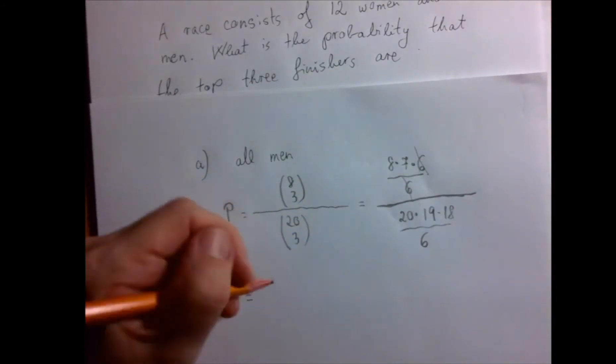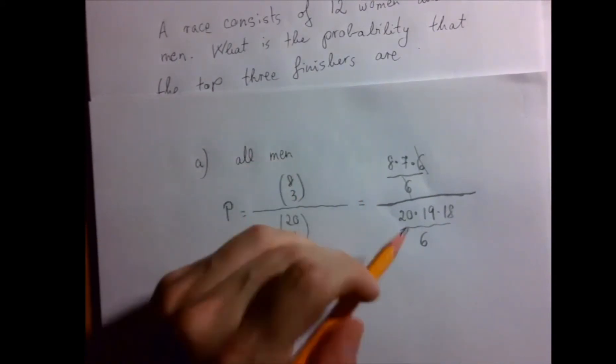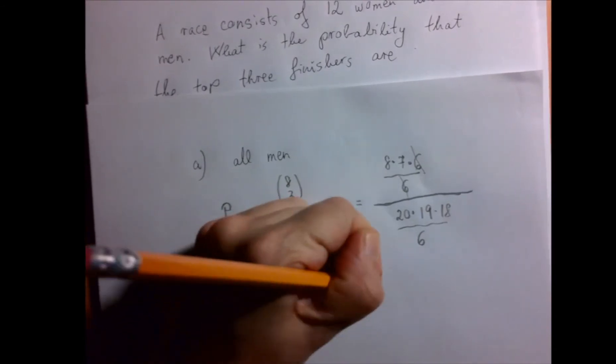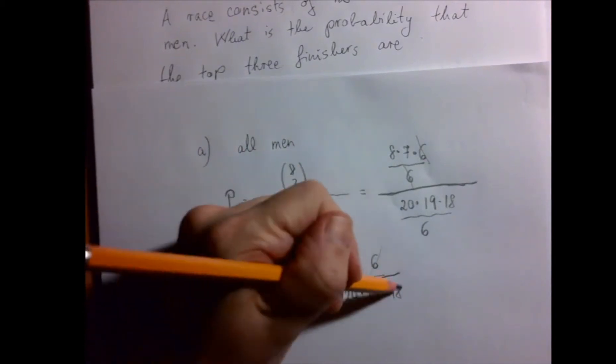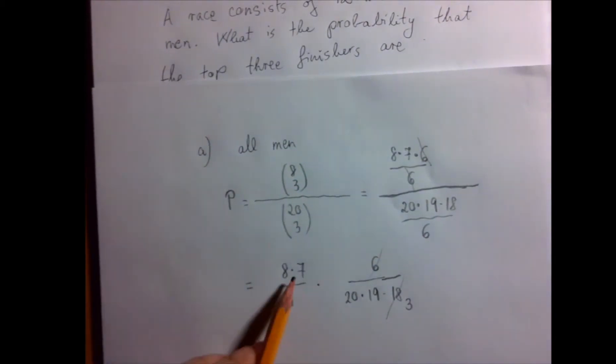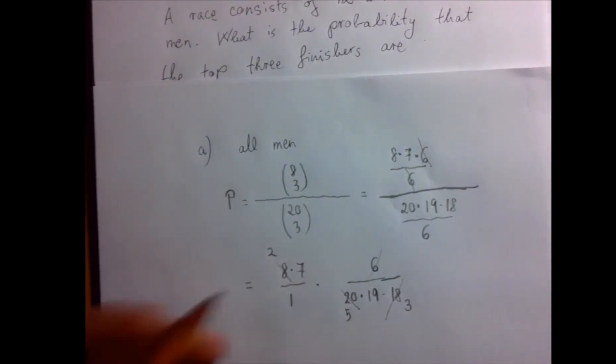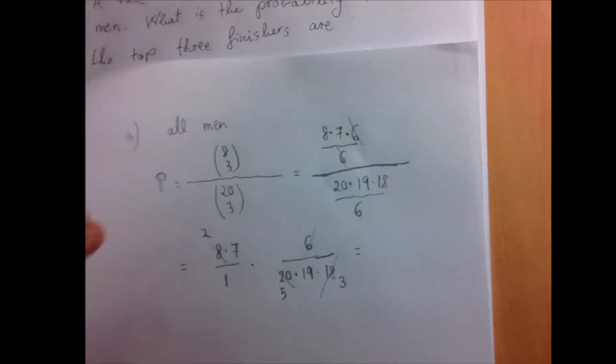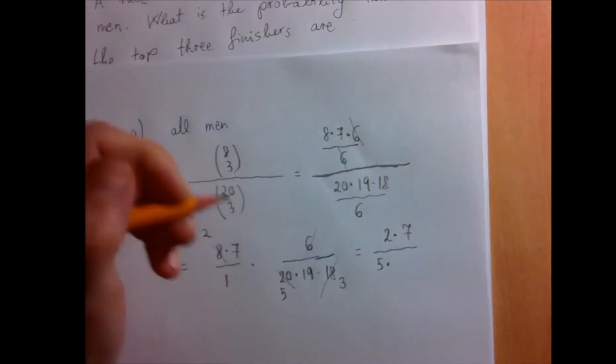So we have 8 times 7. I'm going to write an over 1 because we canceled out everything. So to divide is to multiply by the reciprocal. We're going to flip the second one. And we have 6 times 20 times 19 times 18. There is cancellation between 6 and 18. So now we have a 3 left. Nothing in the denominator is divisible by 7. So 8 is the only thing that we can cancel out. Both 8 and 20 are divisible by 4. 8 is 2 times 4 and 20 is 5 times 4. So what we're left with is 2 times 7 divided by 5 times 19 times 3.